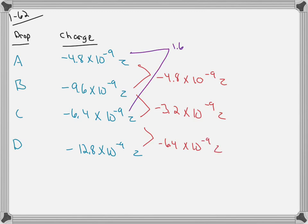But the smallest difference is actually between drops A and C, which is 1.6 times 10 to the negative 9 zorgs. So we will assume that this is the charge on a single electron.